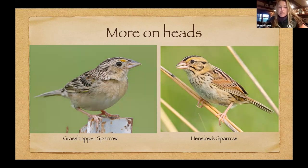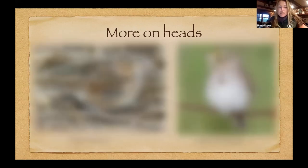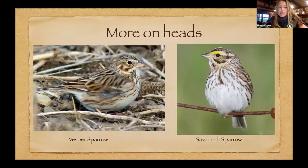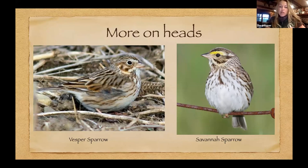At first glance the Vesper sparrow and Savannah sparrow are very similar looking birds. The Vesper sparrow has a more prominent eye ring, while the Savannah sparrow has a yellow lore and a bit of yellow above the eye — the eyebrow is very indicative of that species. These birds occupy fairly similar habitats, so if you're not paying attention to the super fine details, you would not be able to tell them apart.